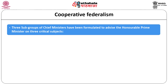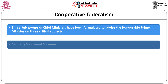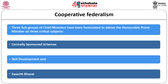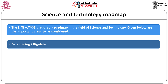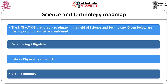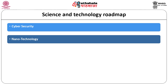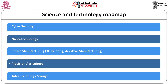Three subgroups of chief ministers have been formulated to advise the Prime Minister on three critical issues: centrally sponsored schemes, skill development and Swachh Bharat. Another activity is the science and technology roadmap for the future. NITI Aayog prepared a roadmap in the field of science and technology. Important areas considered include data mining, cyber physical systems, biotechnology, cyber security, nanotechnology, smart manufacturing such as 3D printing, additive manufacturing, precision agriculture, and advanced energy storage.